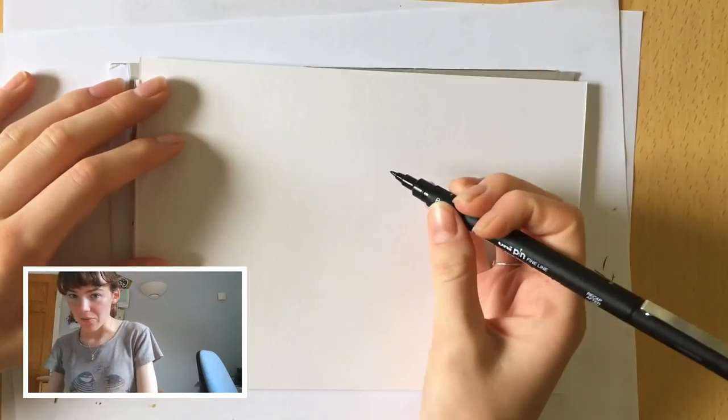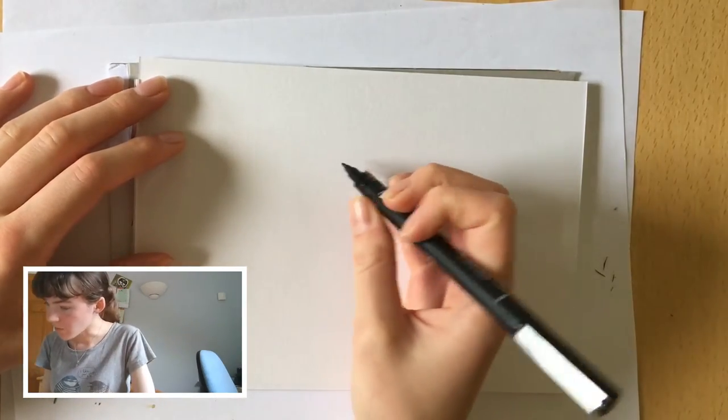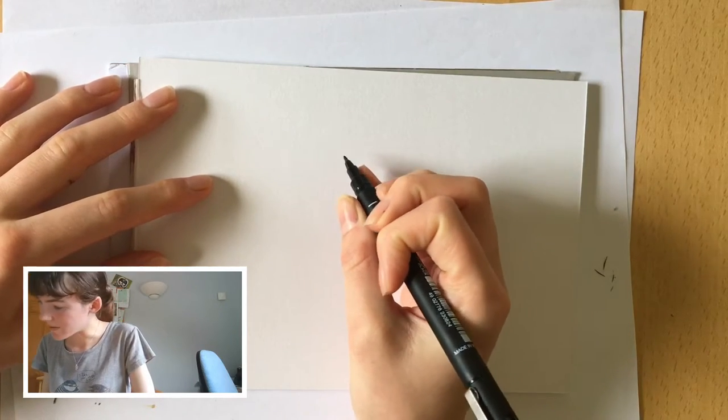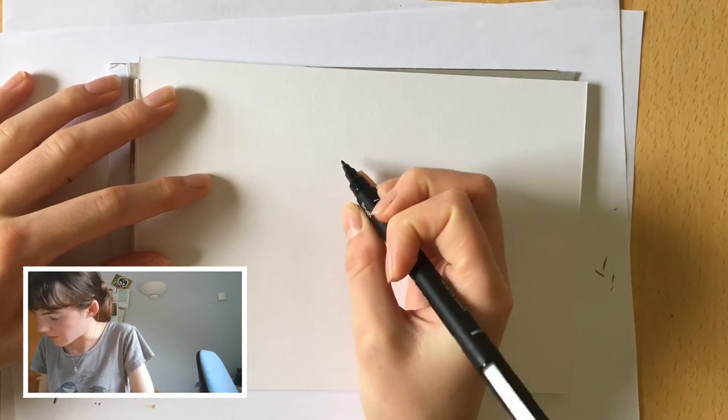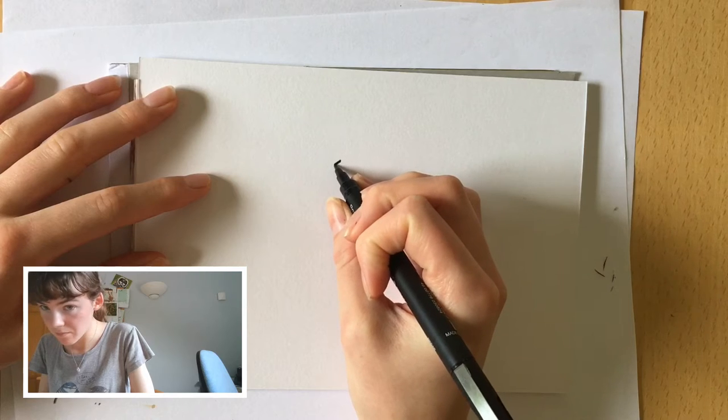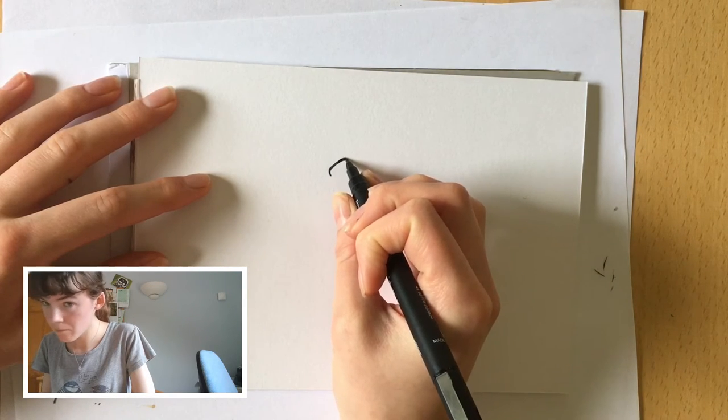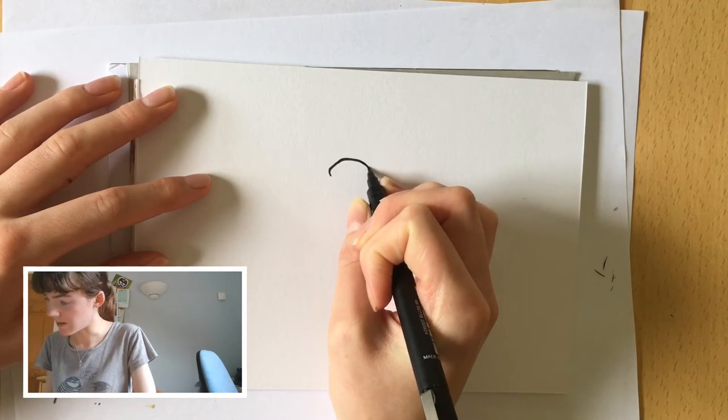So firstly we're going to draw the head of the falcon. The falcon has quite a round head. It's quite flat around the top though, so we'll draw the edge first. So that's the head.